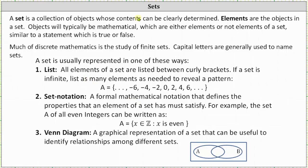Welcome to an introduction to sets and set notation. A set is a collection of objects whose contents can be clearly determined. Elements are the objects in a set. Objects will typically be mathematical, which are either elements or not elements of a set, similar to a statement which is true or false.